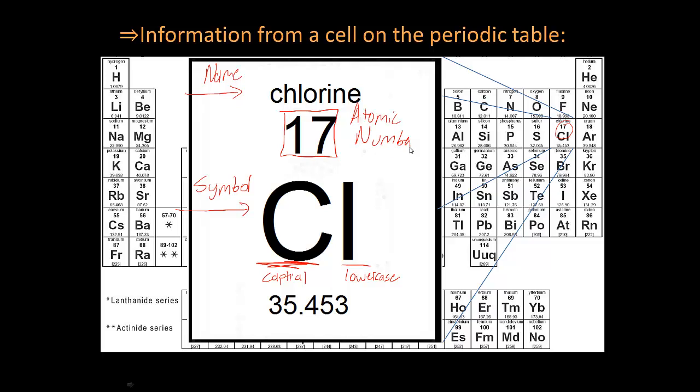So this tells me the number of protons in chlorine. If an atom has 17 protons, it's got 17 electrons as well because it's neutral. But if it has 17 protons, it is chlorine. If it doesn't have 17 protons, it's not chlorine.